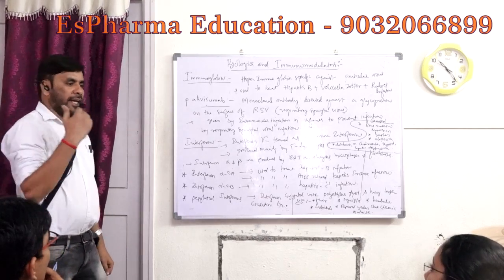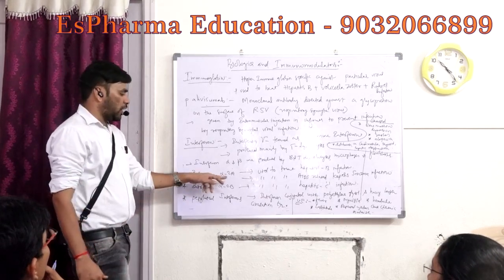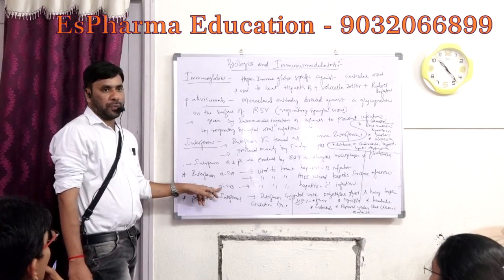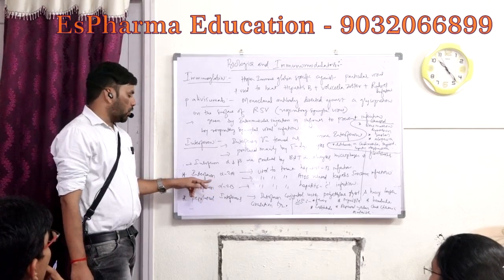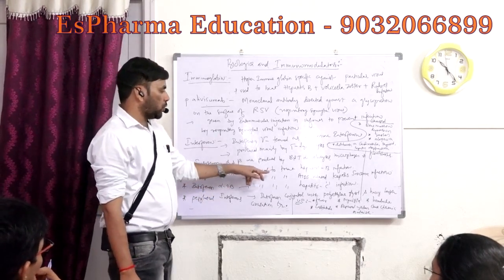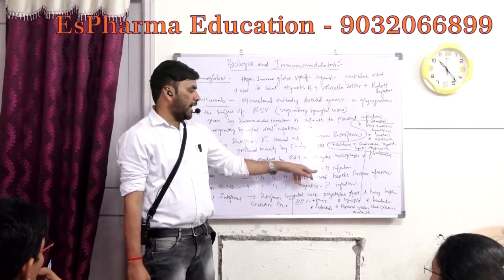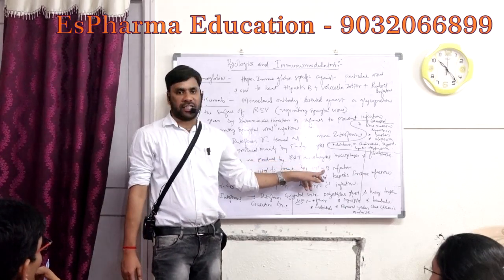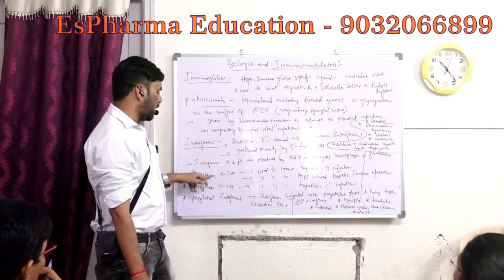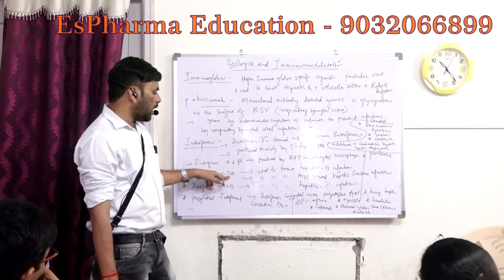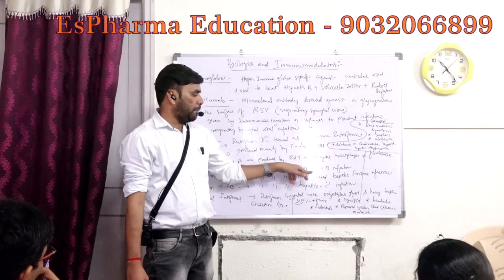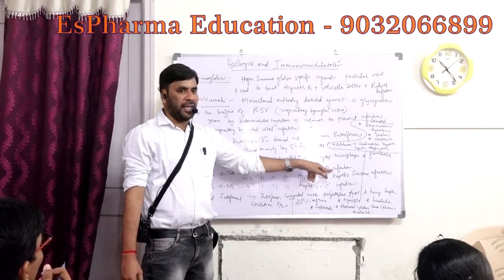In interferons, we have subtypes: interferon alpha 2A and interferon alpha 2B. Interferon alpha 2A is used to treat Hepatitis B infection.